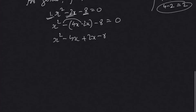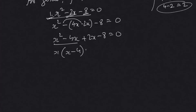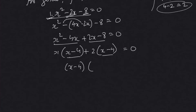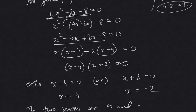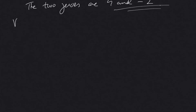So x² - 2x - 8 = x² - 4x + 2x - 8. Taking x common from the first two terms gives x(x - 4), and taking 2 common from the last two terms gives 2(x - 4). Therefore: (x - 4)(x + 2) = 0, giving x = 4 or x = -2. The two zeros are 4 and -2.